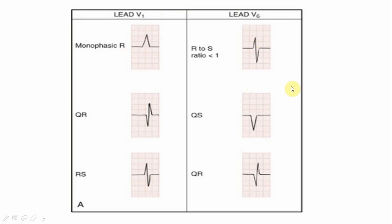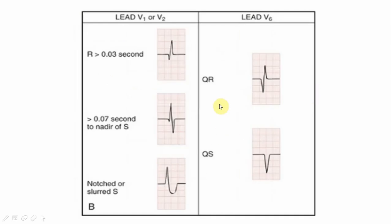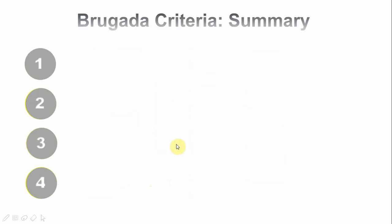Other morphological characteristics include: the width of the R wave in V1 being more than 30 milliseconds; the distance from the beginning of the R wave to the nadir of the S wave being more than 70 milliseconds (about 2 small squares); or the presence of a notched or slurred S wave in V1. All of these are morphological criteria indicating VT.